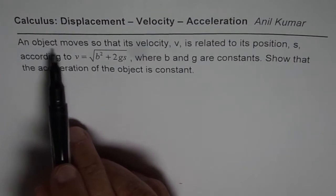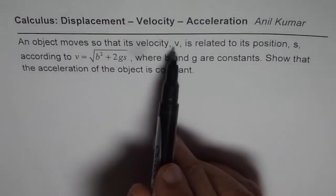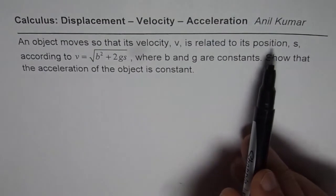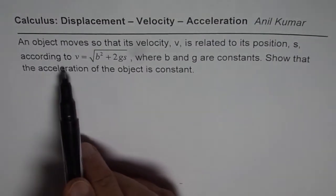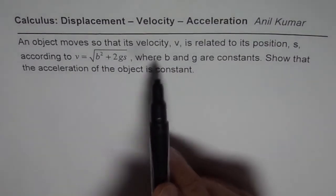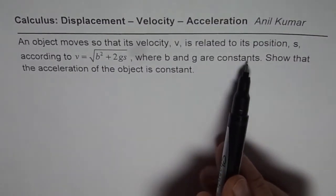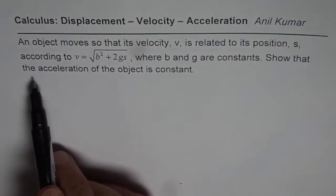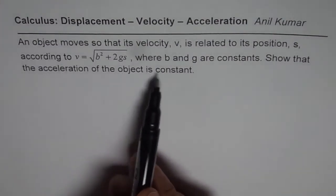An object moves so that its velocity v is related to its position s according to v = √(b² + 2gs), where b and g are constants. Show that the acceleration of the object is constant.